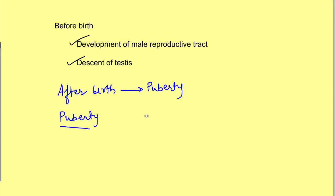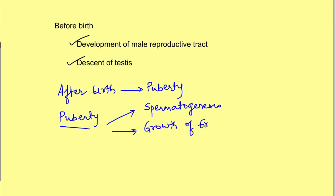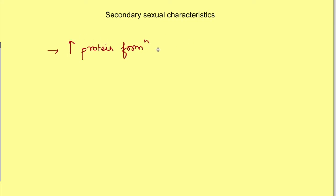At puberty, what are its functions? First and foremost is spermatogenesis — the formation of sperm depends on testosterone. Then there is growth of external genitalia and development of secondary sexual characteristics. The penis and scrotum depend on the presence of testosterone. Secondary sexual characteristics include increase in protein formation and muscle development, and by virtue of increased protein formation, it also causes increase in bone matrix, causing thickening of bone along with deposition of calcium salts.